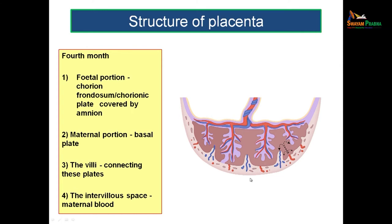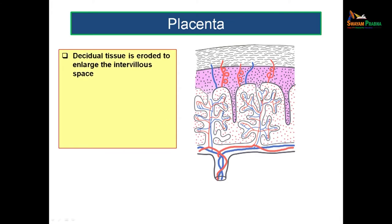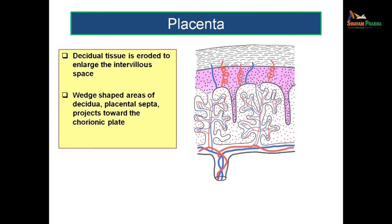The decidual tissue, which is part of the maternal endometrium, will be eroded by the enlarging intervillus space. The intervillus spaces, as they move into the endometrium, erode the endometrial wall. At times, regions of decidua remain between the intervillus spaces. These persisting regions are known as placental septa, and they project towards the chorionic plate of the fetus.